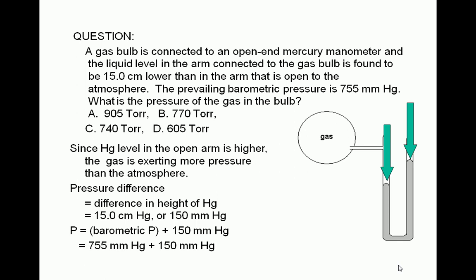755 millimeters of mercury plus 150 millimeters of mercury equals 905. The pressure of the gas is 905 millimeters of mercury or 905 Torr since 1 Torr is exactly equal to 1 millimeter of mercury. The correct answer is choice A.